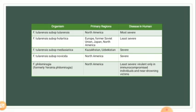Novicida is from North America, and philomiragia is also from North America. Subspecies tularensis causes the most severe disease in humans and is considered the most virulent, with an infection dose of less than 10 CFU per mL — meaning only a very small quantity of organisms is needed to cause disease. Subspecies holarctica is less severe, while mediasiatica and novicida are both severe.